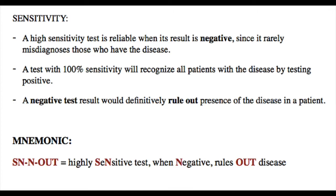To help remember what a sensitivity test is, let us look at this mnemonic. The mnemonic is SNOUT — SN stands for sensitivity, N is for negative, and OUT is for ruling out the disease. Hence, a highly sensitive test when negative rules out disease; in other words, a negative test result would definitively rule out the presence of the disease in a patient.